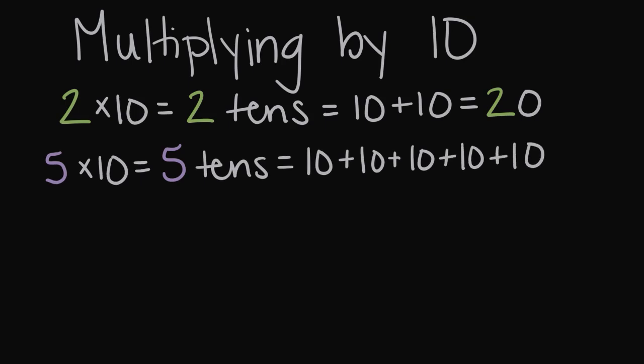So we have 5 tens. We have one, two, three, four, five tens. And we can solve that. We can add those together: 10, 20, 30, 40, 50. So our solution here is 50. 5 tens is 50, or 5 times 10 is 50.